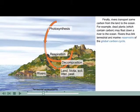Finally, rivers transport some carbon from the land to the ocean. For example, dead plants, which contain carbon, may float down a river to the ocean. Rivers thus link terrestrial and marine reservoirs of the global carbon cycle.